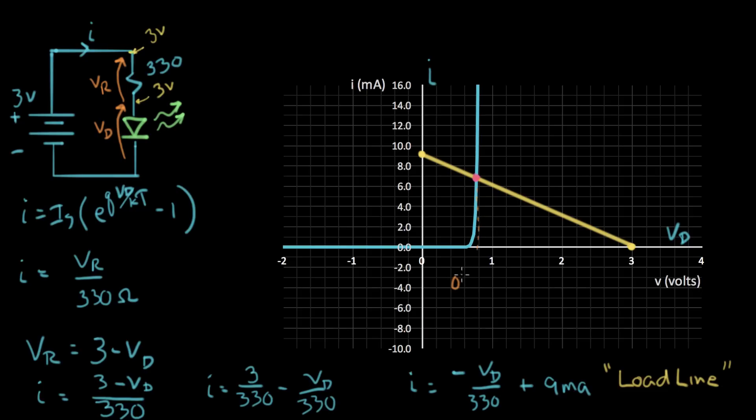Right there is about 0.7 volts. And the current over here, if I read off the current, just straight across there, it's about 6.8 milliamps of current. So now we actually just solved our circuit using a graphical technique.